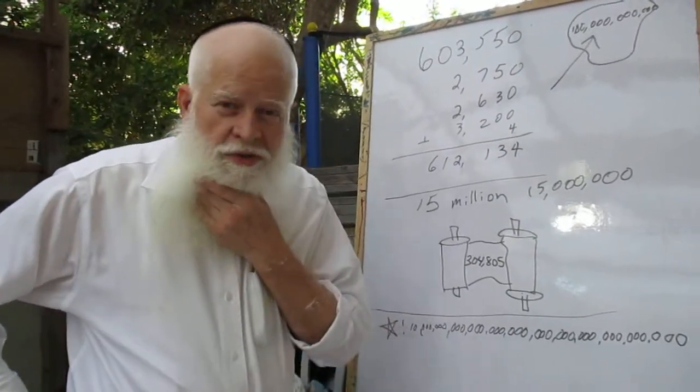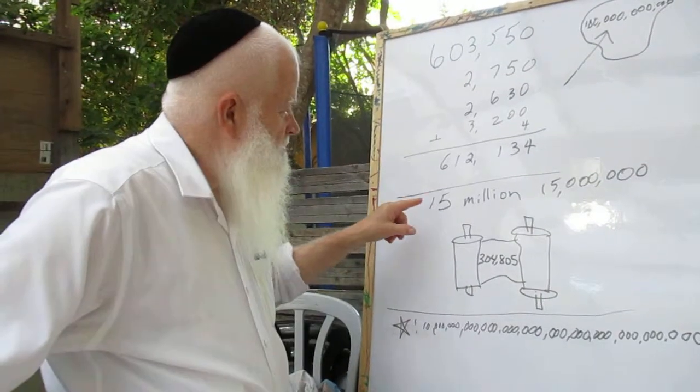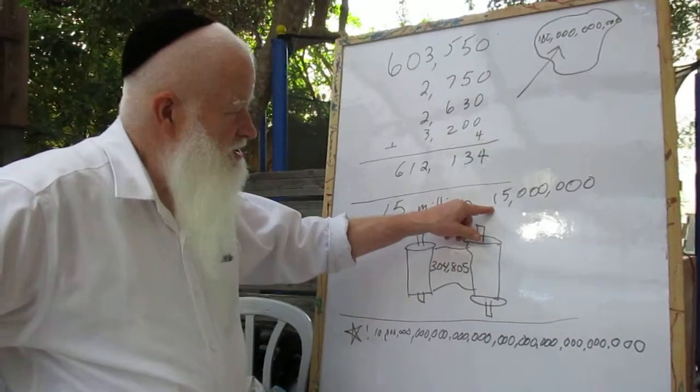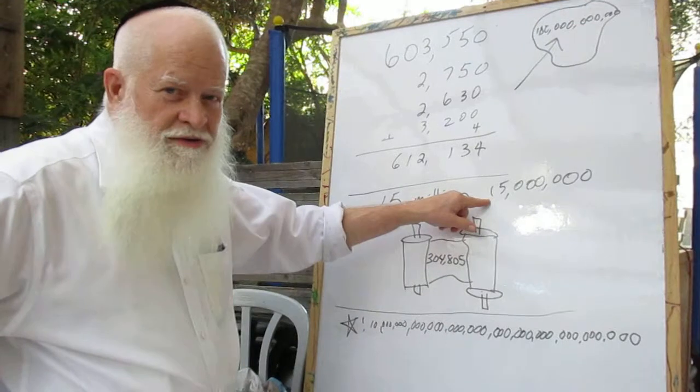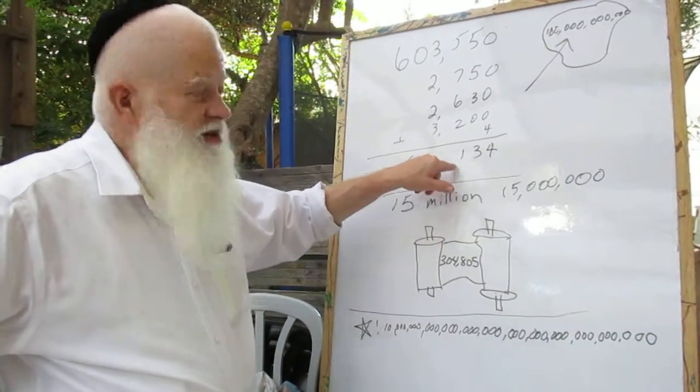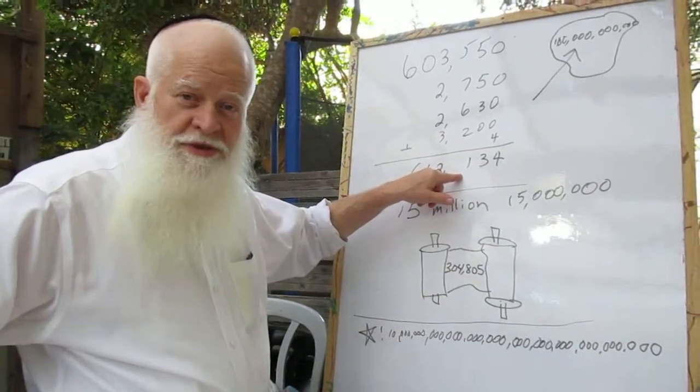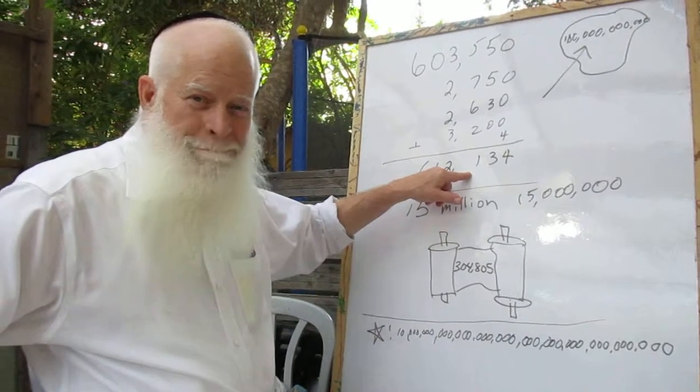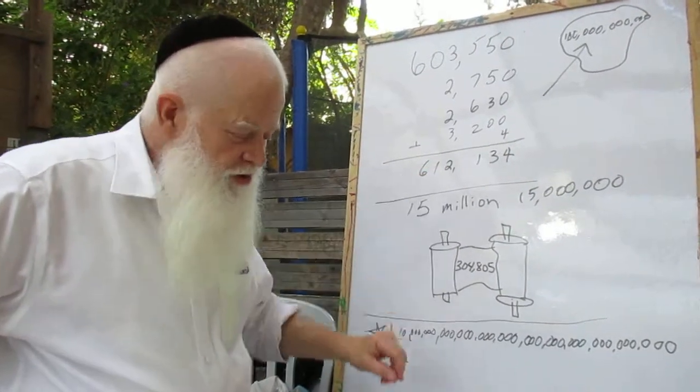You know how many Jews there are in the world today? 15 million. That's not a huge growth. At the time of Eretz Yisrael there were about 30,000 people in China. And now there's 1.2 billion. So the numbers are a little strange.